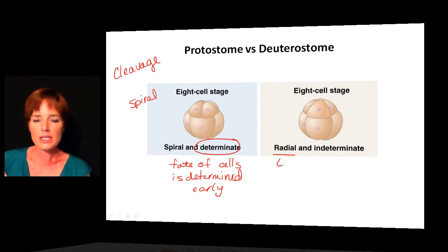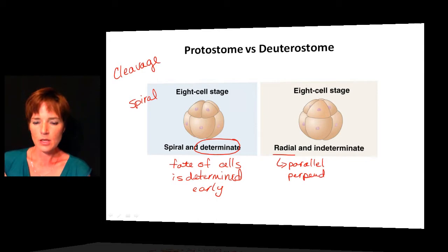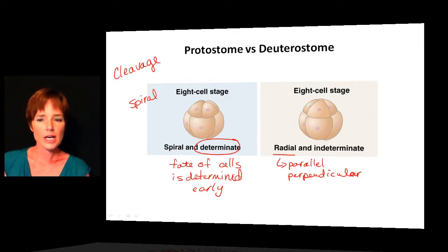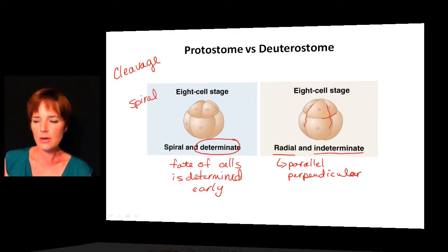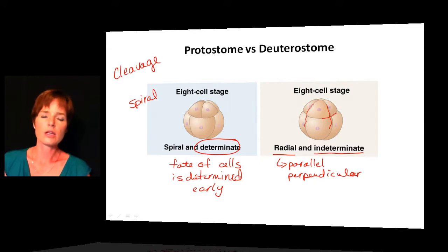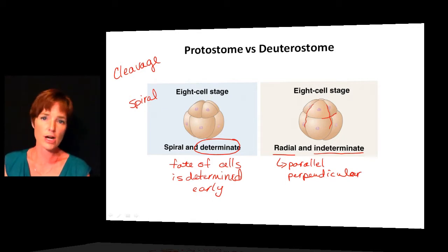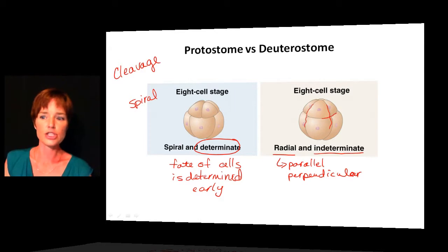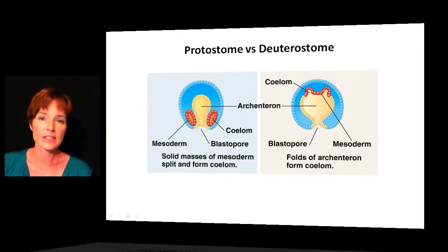For deuterostomes, by comparison, cell division is radial — the planes of cell division are either parallel or perpendicular to the axis. This gives cells that are roughly the same size, forming a more organized cell mass where the division lines line up with each other. Deuterostomes also have indeterminate fates, meaning the cells retain their capacity to become anything. These are essentially stem cells — each one of those eight cells could develop into a full embryo.